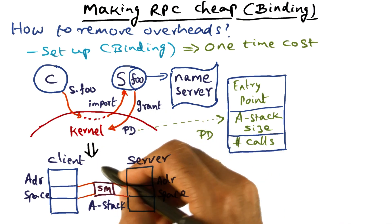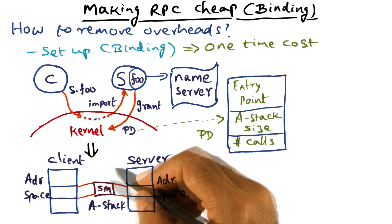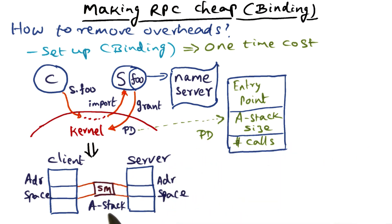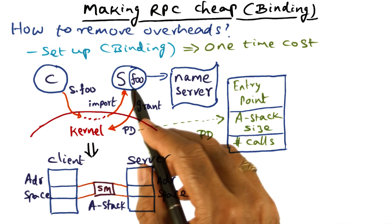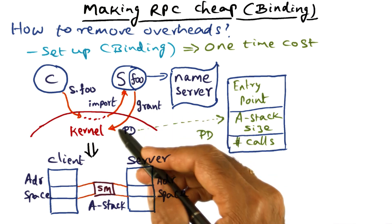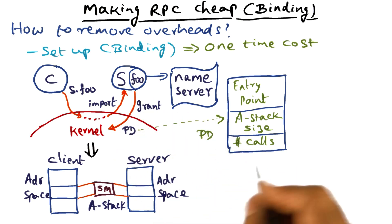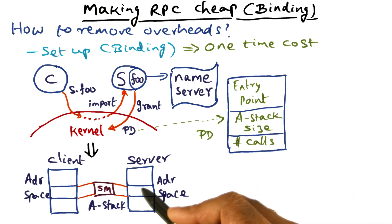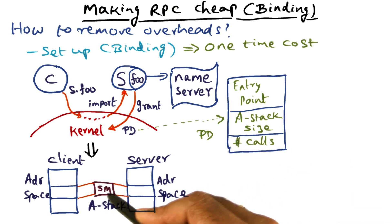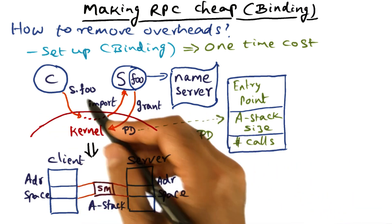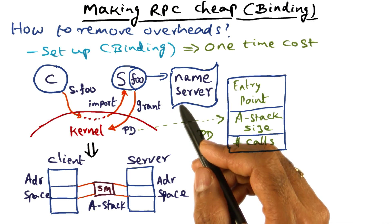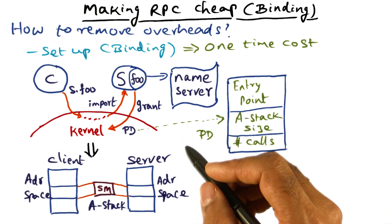The kernel also establishes a buffer, and this is what is called the A stack. The size of this A stack was specified by the server as part of the grant communication, to indicate how big this A stack has to be, because the kernel has no idea what the relationship is between the client and the server.